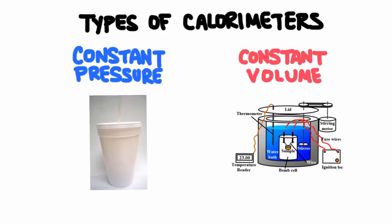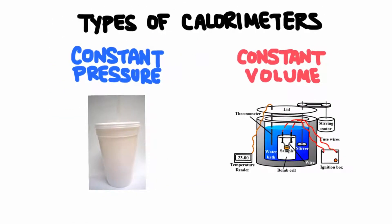There are two different types of calorimeters. The first is called a constant pressure calorimeter, also known as a coffee cup calorimeter, because we just need some sort of insulated container and styrofoam cups work really well. The other type is called a constant volume calorimeter, also known as a bomb calorimeter, although it doesn't really have anything to do with an actual bomb.